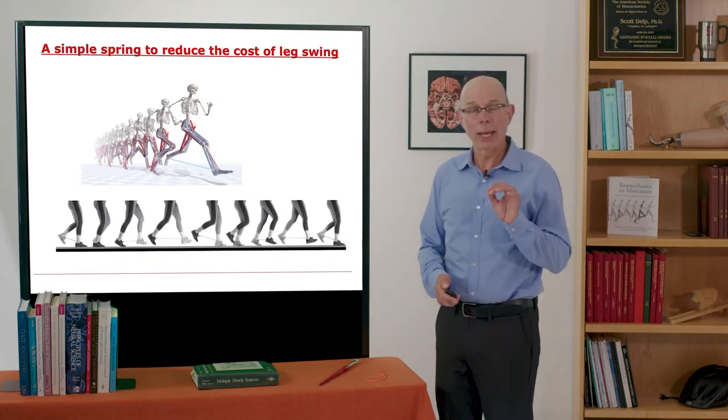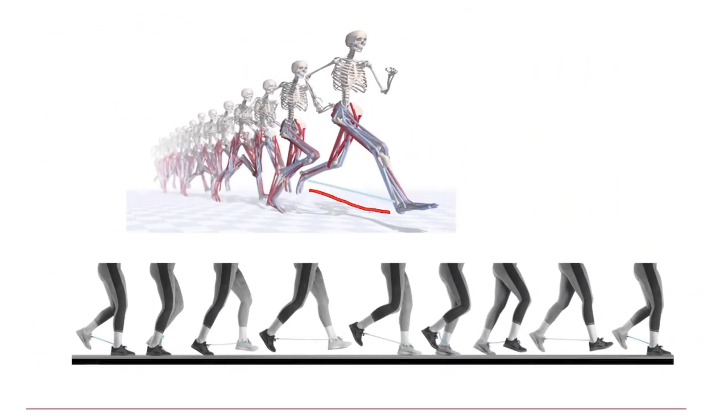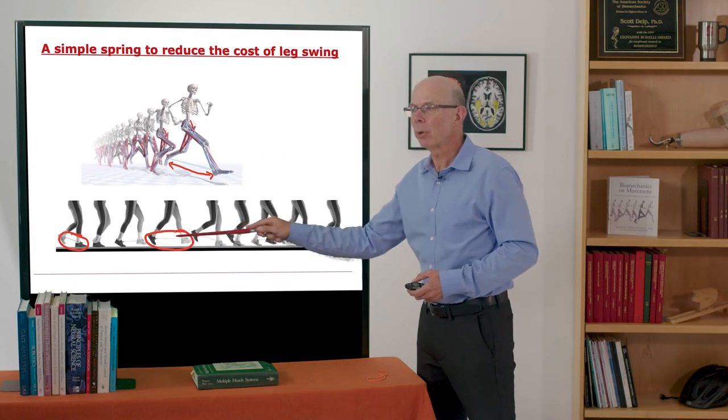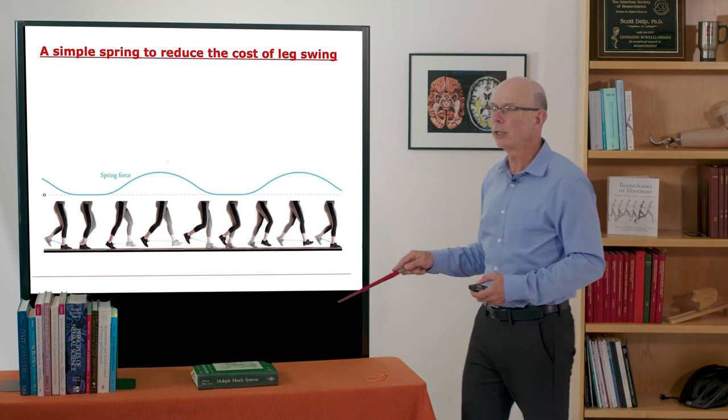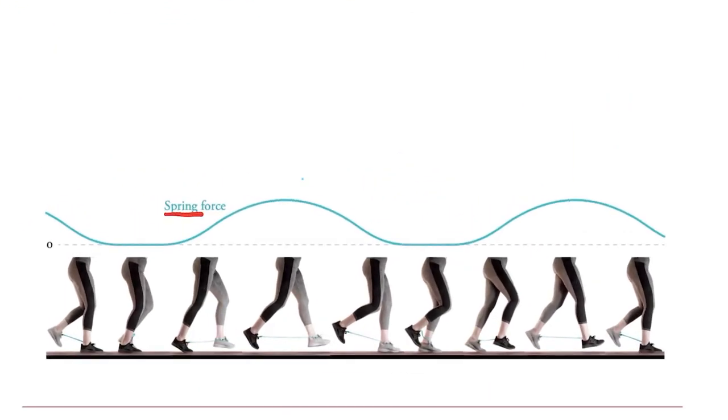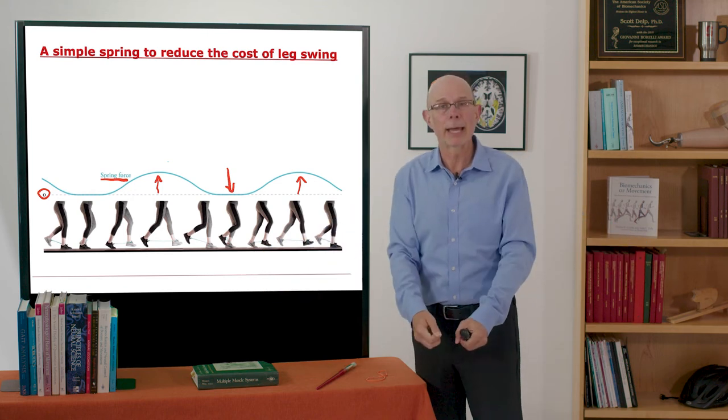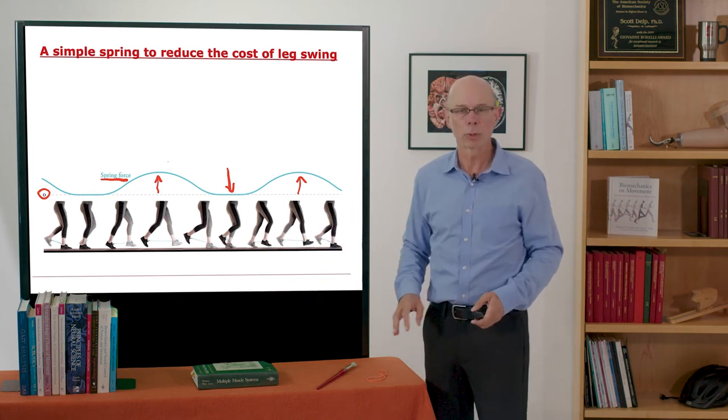So a simple spring, we thought, might reduce the energetic cost. We had hints from simulations where we could add the spring and then here's Kara wearing the spring here and you see it's attached to her shoes with carabiners and when the legs are separated the exotendon generates force. And you can see that here. What I'm plotting is just the spring force, which goes to zero when the legs are together, comes up when the legs are apart and then back down to zero. So you get this cyclic loading and unloading of the spring. When the legs are separated it's pulling them back together and when they're together it doesn't do anything to interfere with the motion.